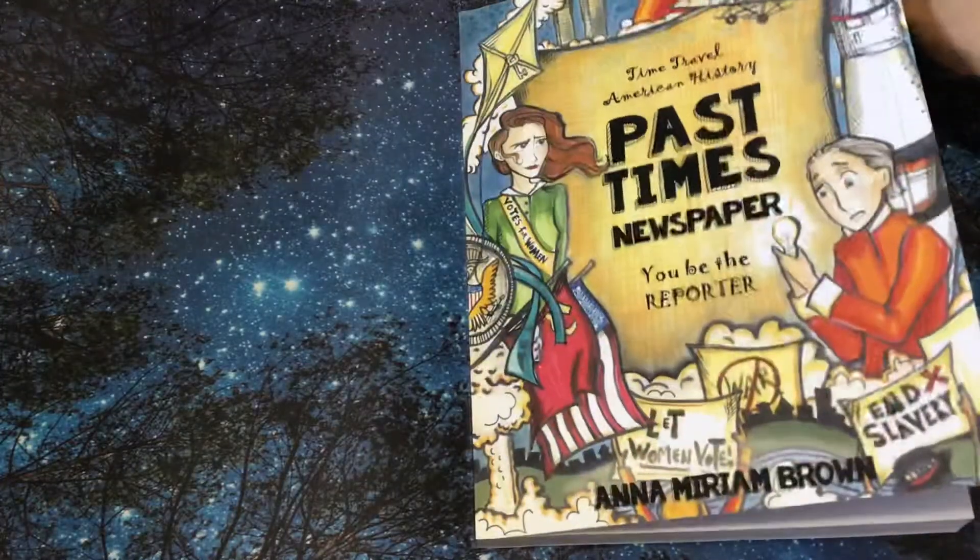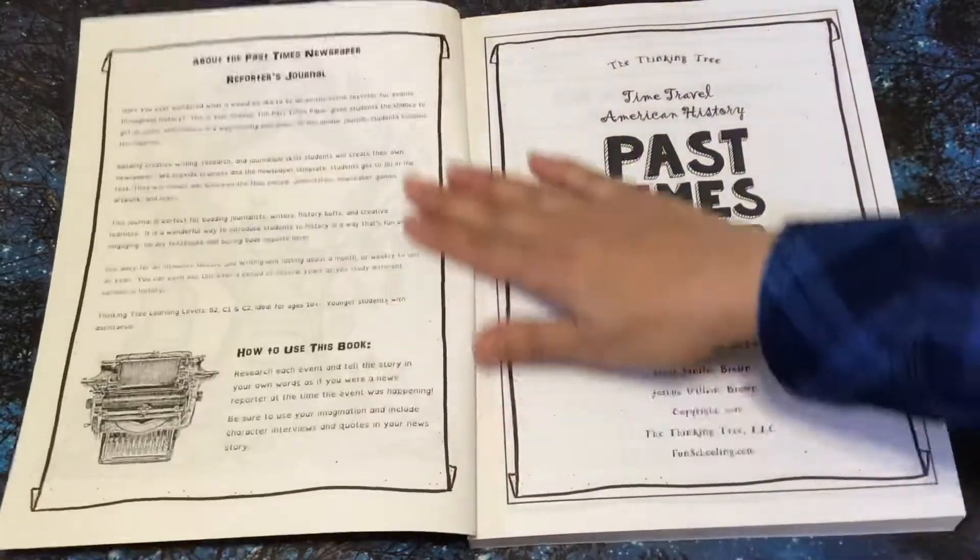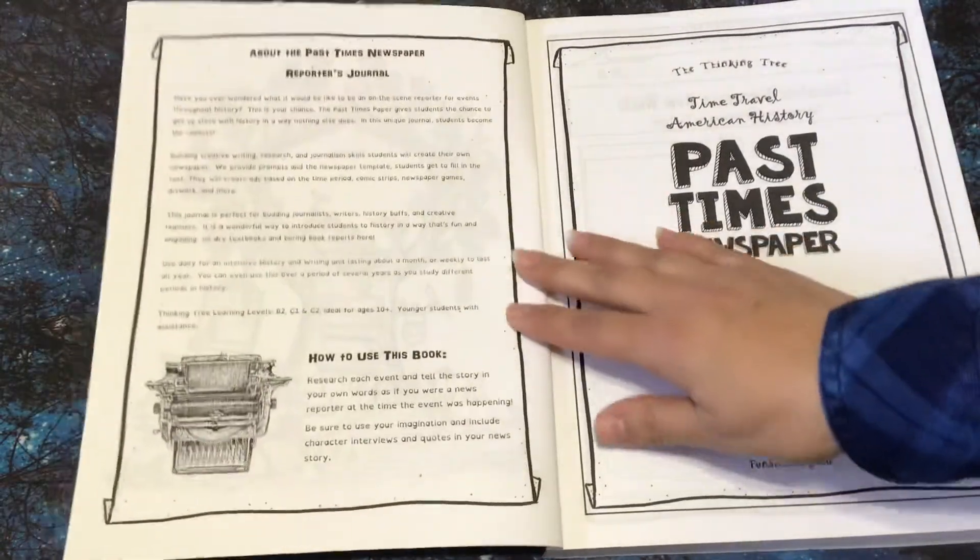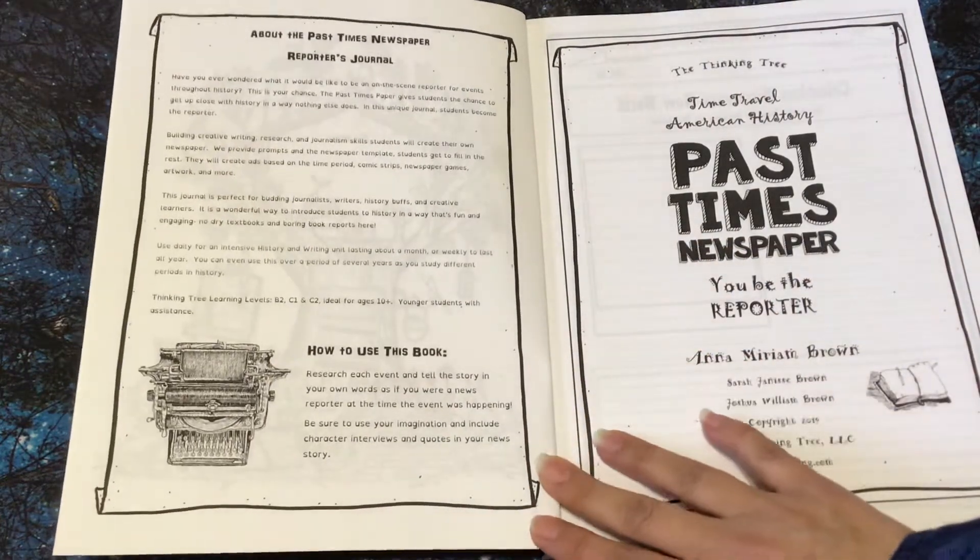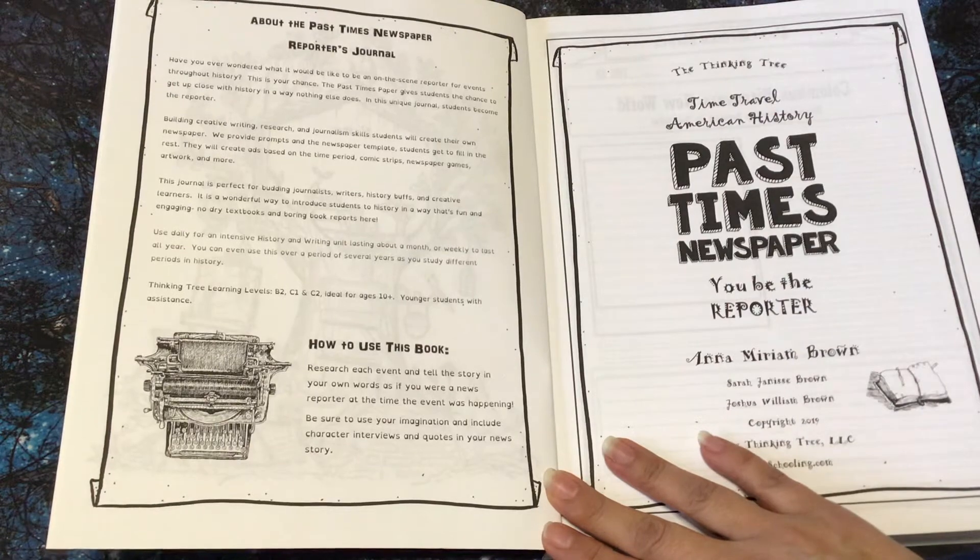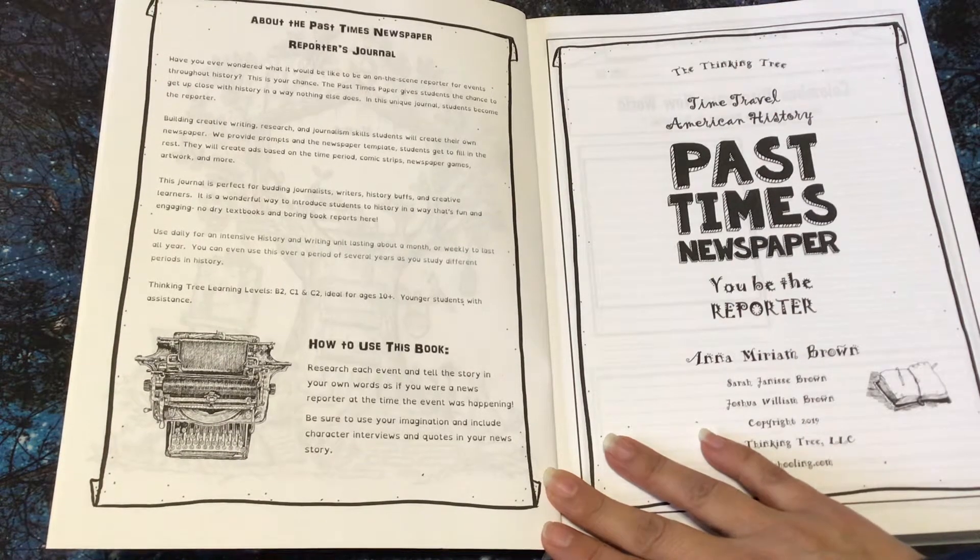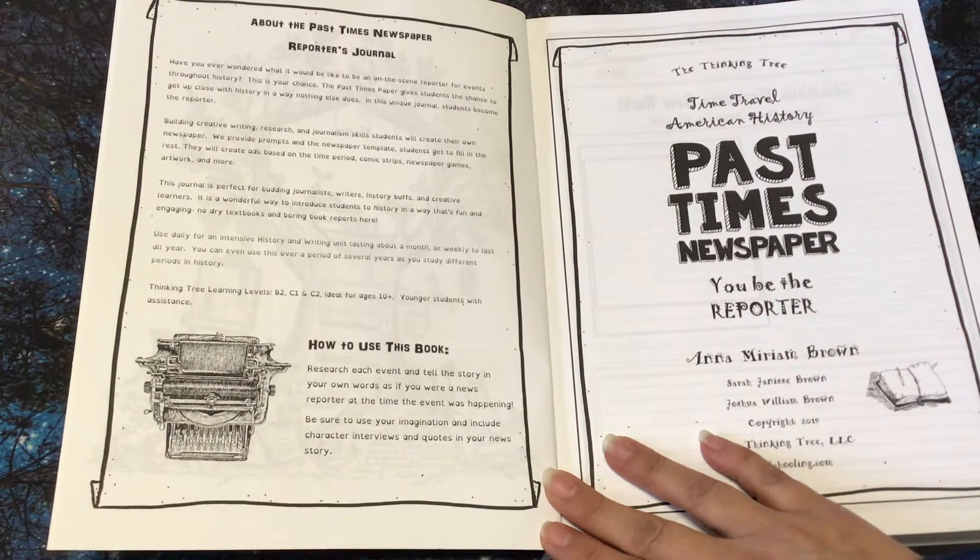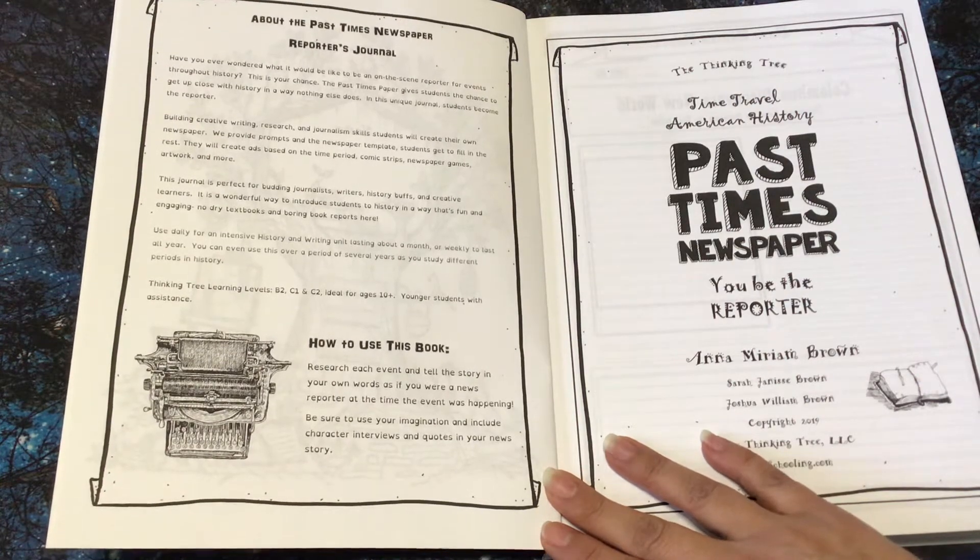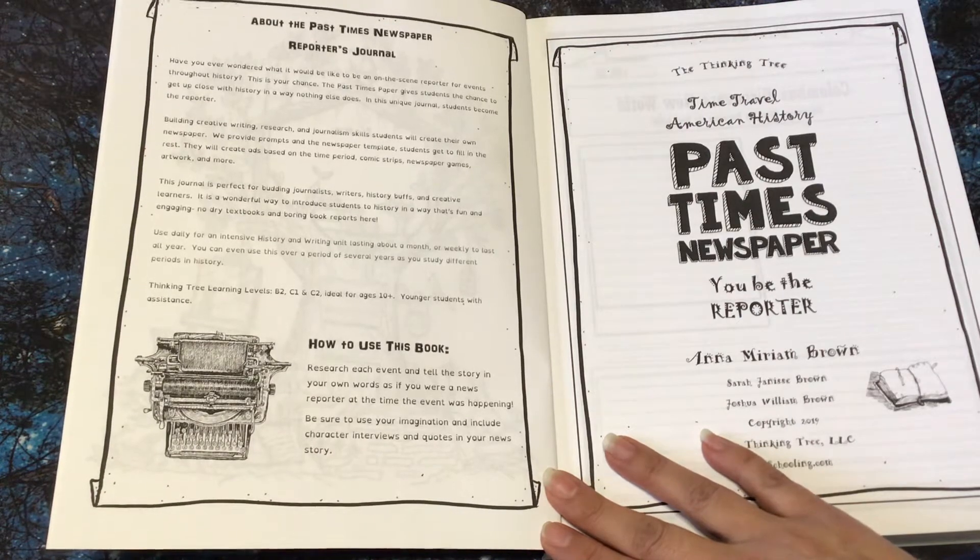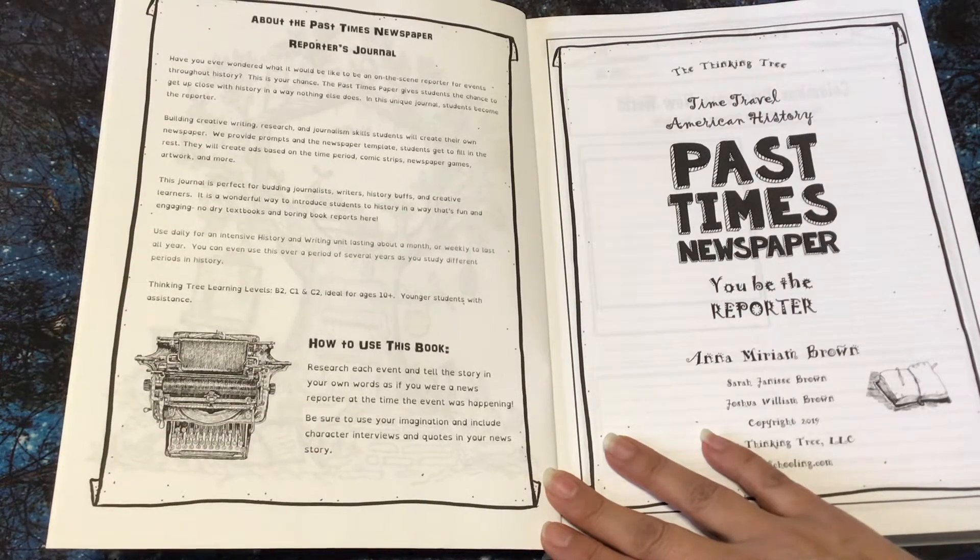So this one's really neat in the fact that they get to be a reporter. I'm just going to read over here. It says, about the past Times Newspaper, Reporter's Journal. Have you ever wondered what it would be like to be an on-the-scene reporter for events throughout history? This is your chance. The past Times paper gives students the chance to get up close with history in a way nothing else does. In this unique journal, students become the reporter.